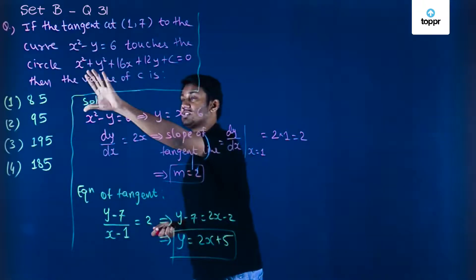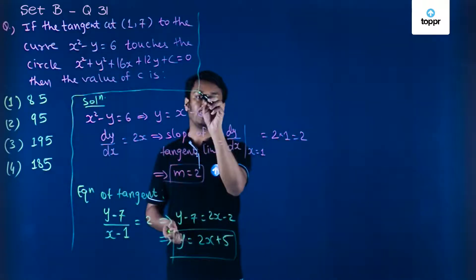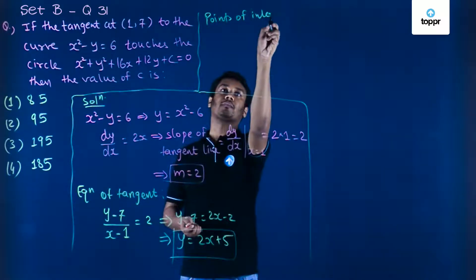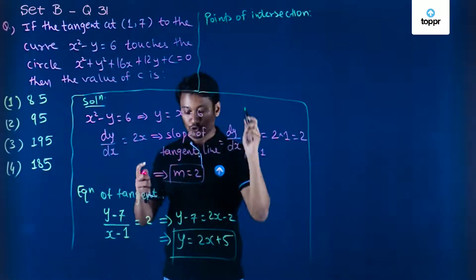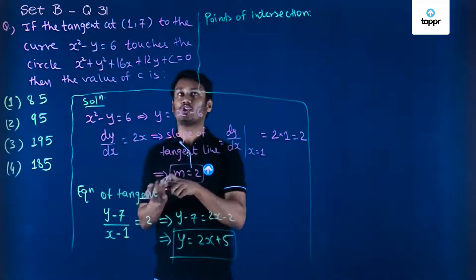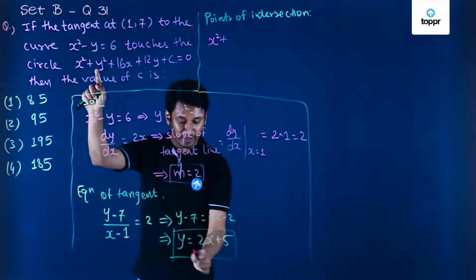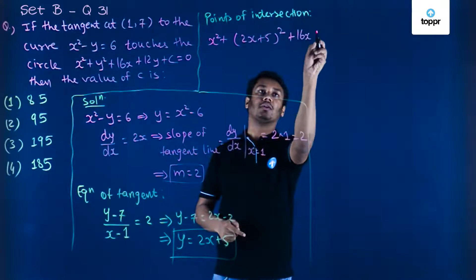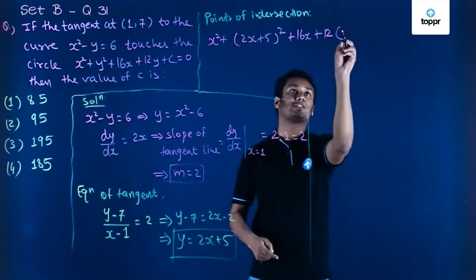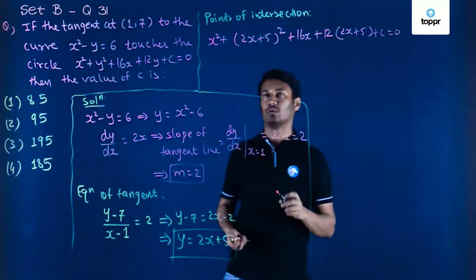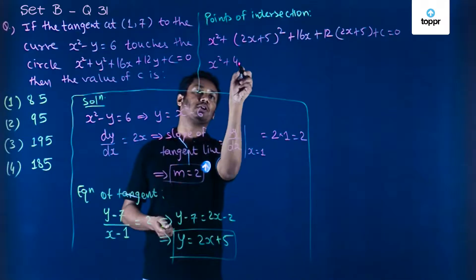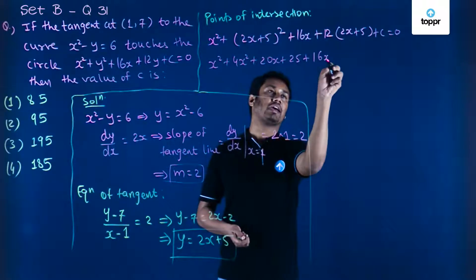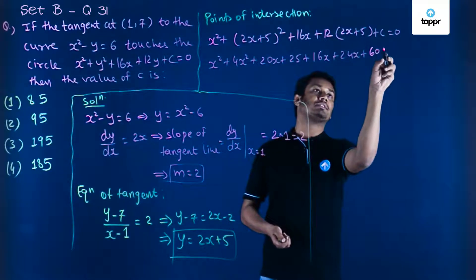The question further says that this line will touch the circle. To find the points of intersection, we put the equation of the line into the equation of the circle. The equation of the circle is x squared plus y squared plus 16x plus 12y plus c equal to 0, replacing y with 2x plus 5: x squared plus (2x plus 5) squared plus 16x plus 12(2x plus 5) plus c equal to 0. Expanding: x squared plus 4x squared plus 20x plus 25 plus 16x plus 24x plus 60 plus c equal to 0.